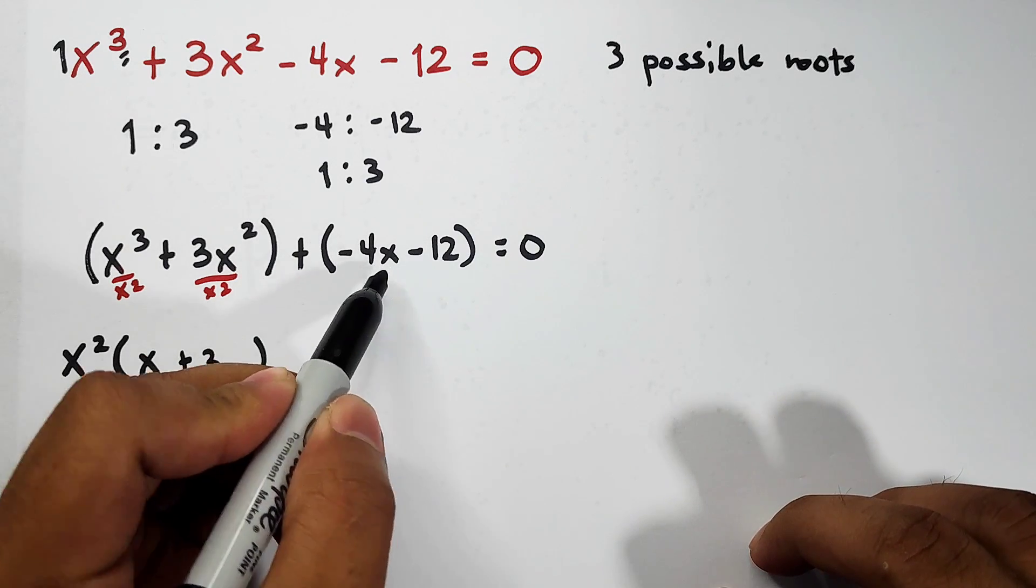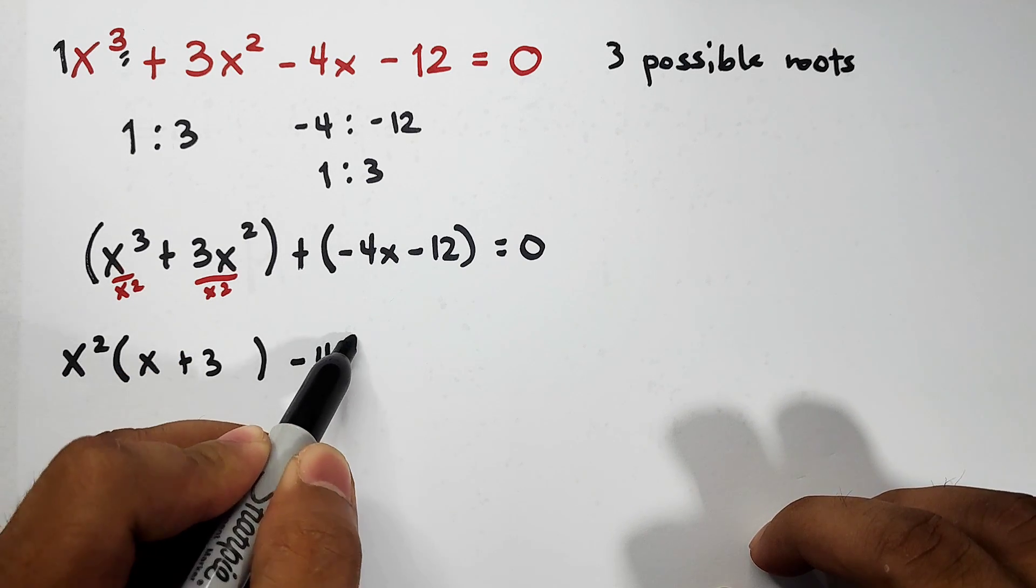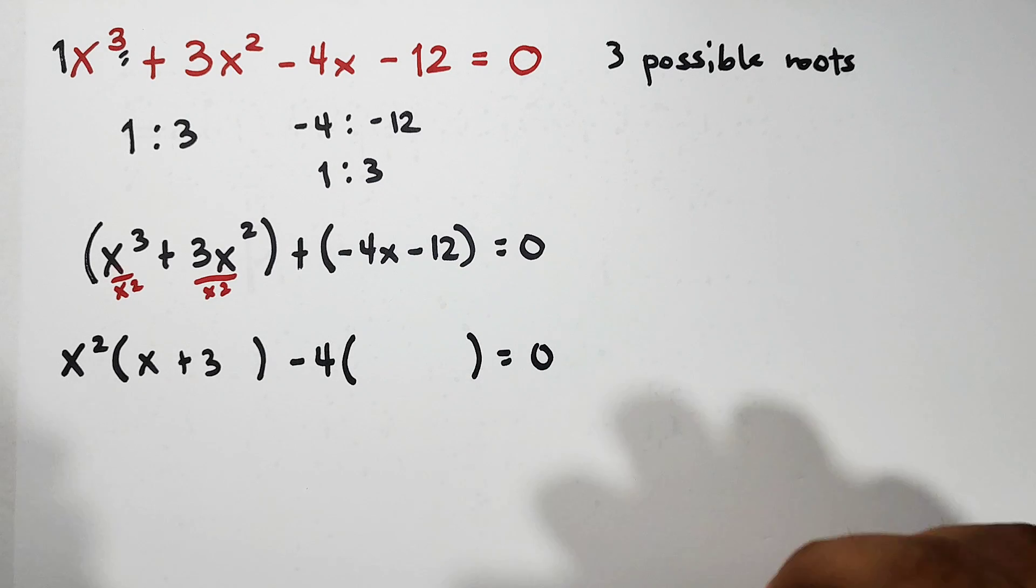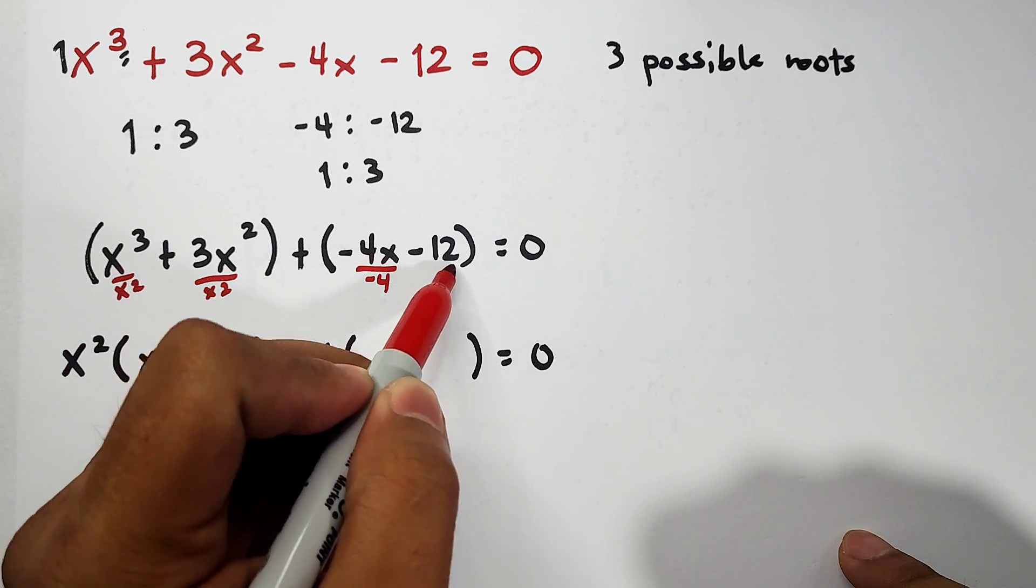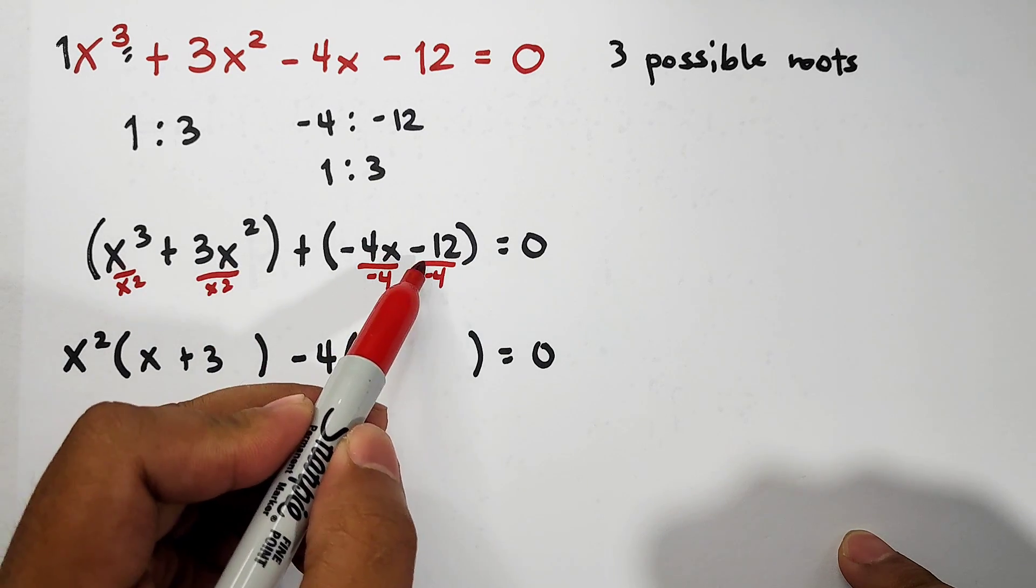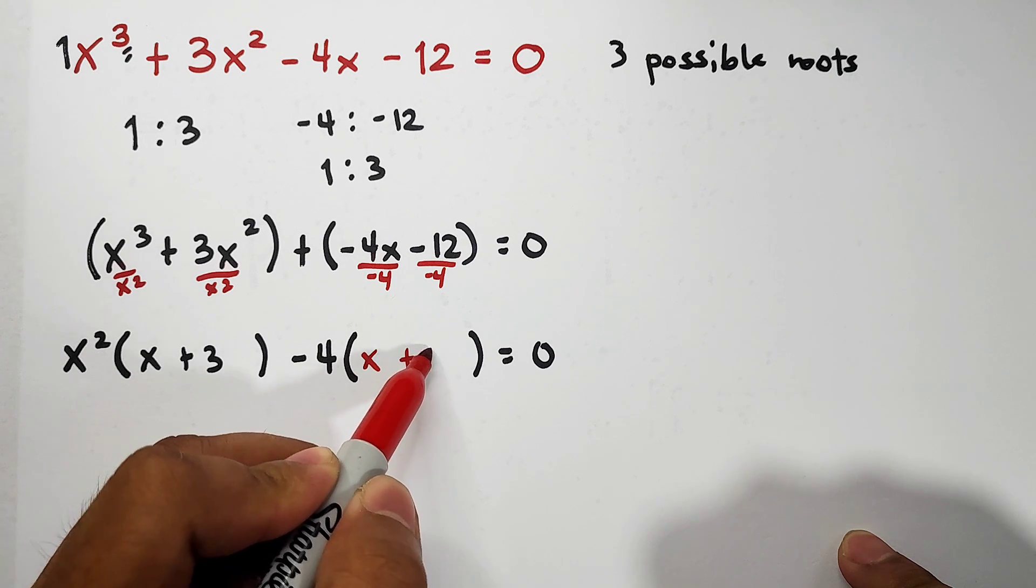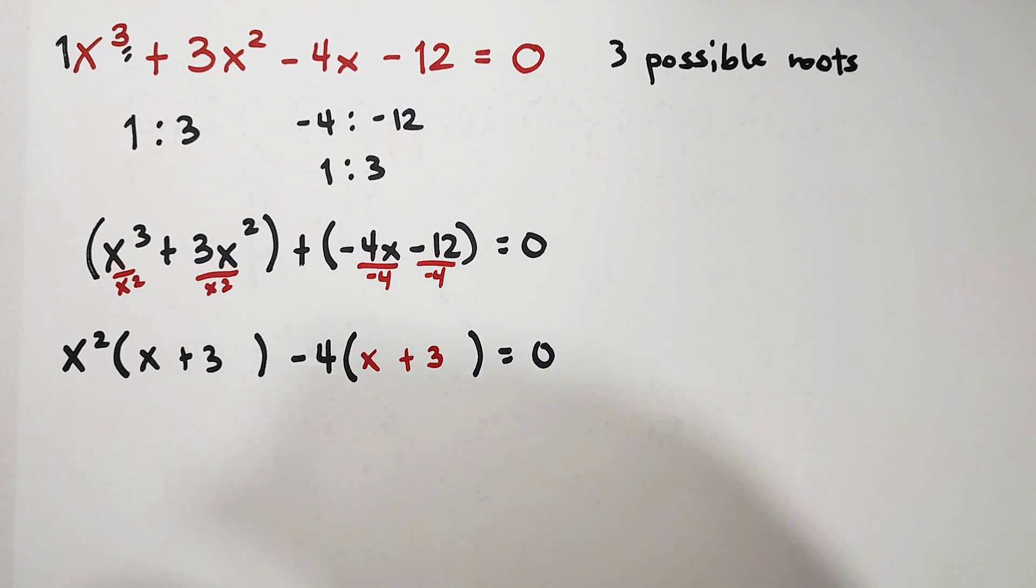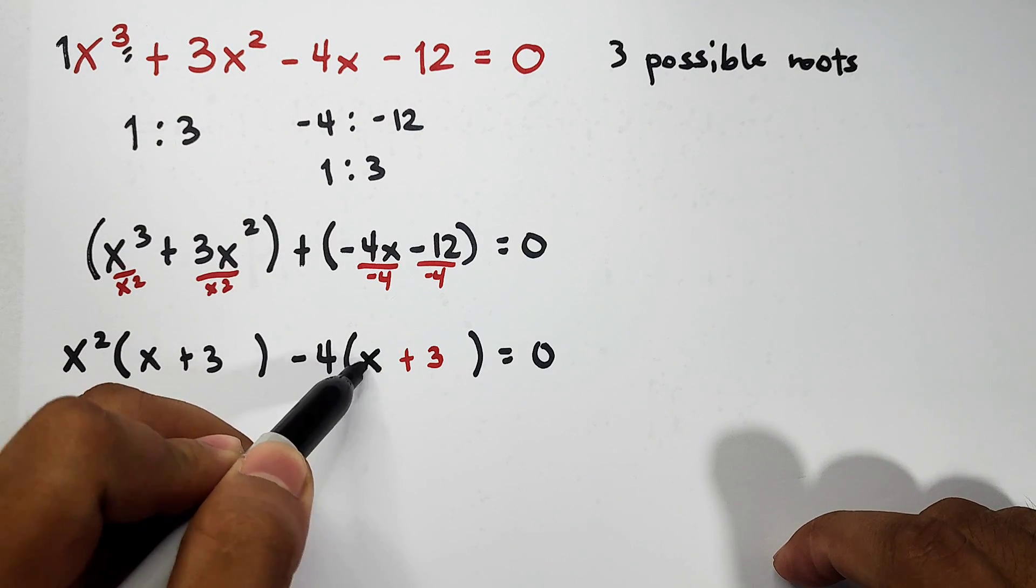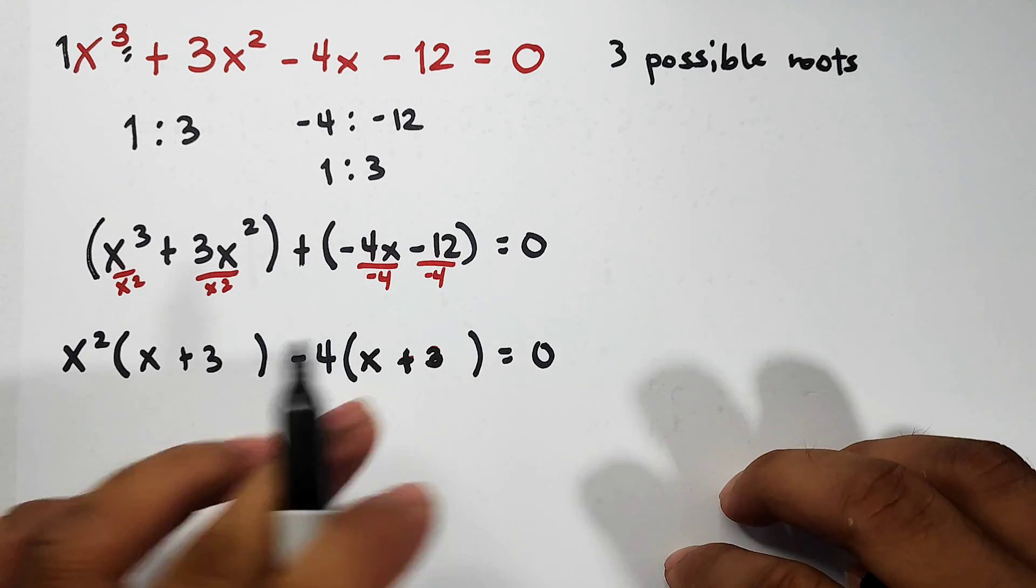For the other group, as you can see, the common factor is negative 4. So factor out negative 4, and to get what remains inside the parenthesis, divide each term by negative 4. Negative 4x divided by negative 4 is simply x. Negative 12 divided by negative 4 is positive 3. So it becomes x plus 3.